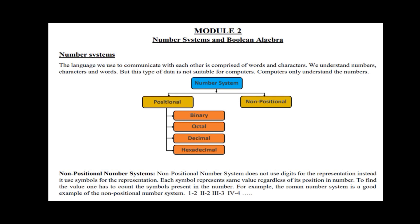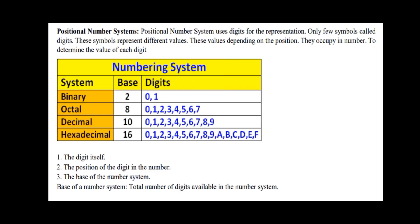For example, we have to write 1, 2, 3. The first example is Roman numeral 1. Roman numeral 2 — the second is the numbering system. The numbering system is a non-positional number system. The numbering system has 4 main classifiers.